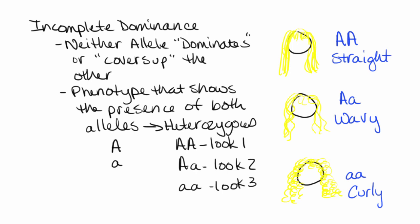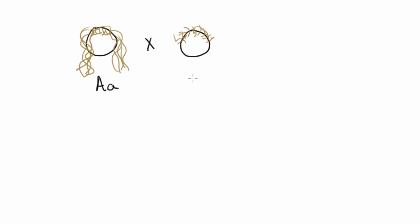Neither allele is really the dominant or recessive allele, because we see the effects of both in the wavy individual. Looking at a cross involving incomplete dominance: if we have two wavy-haired individuals, since they both have wavy hair, they're both going to be heterozygous.